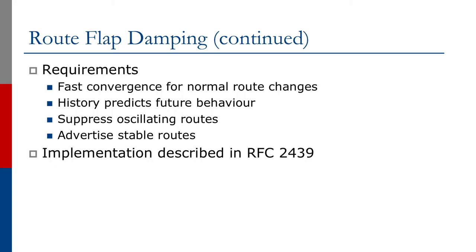If prefixes were coming and going all the time, obviously there's not much connectivity that works, so why use up router CPU running the path selection process when there's no real connectivity possible? The requirements for route flap damping were fast convergence for normal route changes — a brand new prefix should be immediately visible, and a withdrawn prefix should stay withdrawn. This means using the history of the prefix to predict its future behavior, suppressing oscillating routes and advertising stable ones.